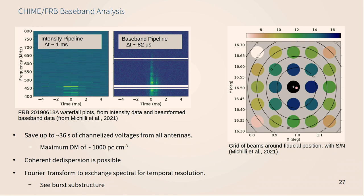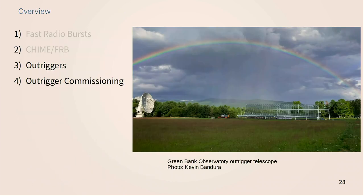An arc minute is good, but it's not an arc second, which is what we need for galaxy identification. For that, we need more telescopes. This is a nice picture of the Green Bank Observatory Outrigger Telescope, which I'll say more about in a minute. Any further questions before we move on?